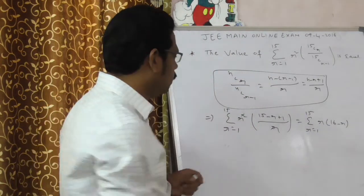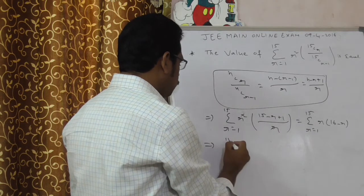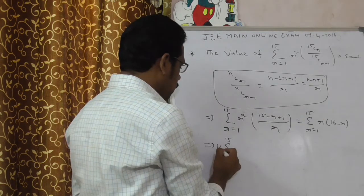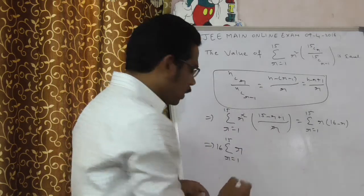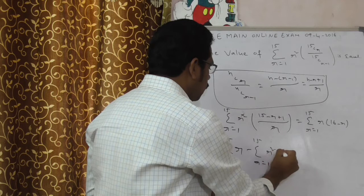Now expand sigma. That implies sigma r equals 1 to 15. Here 16 is constant. Write 16 outside. Minus sigma r equals 1 to 15 r square.